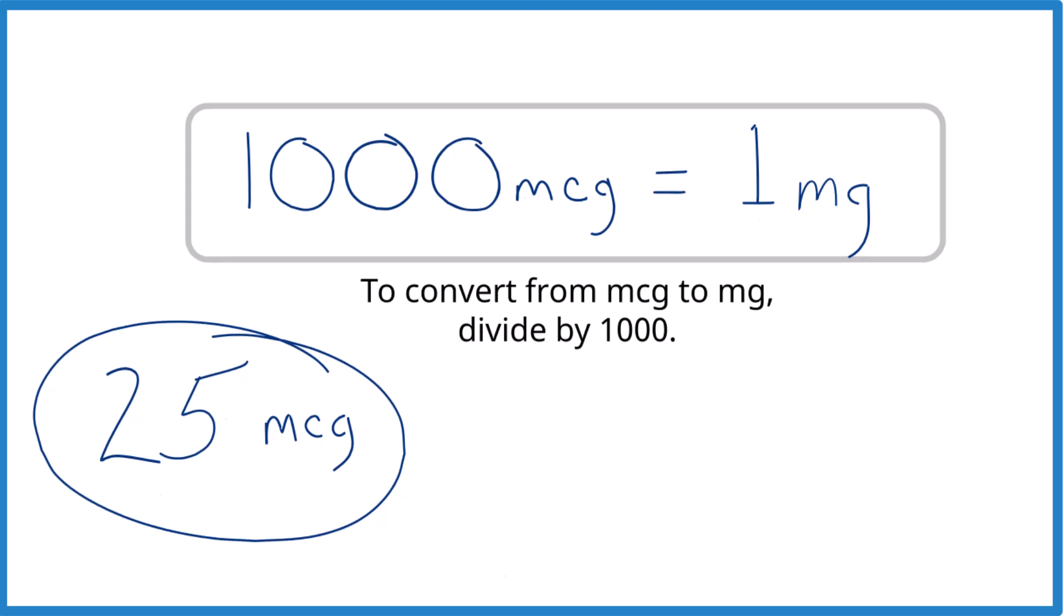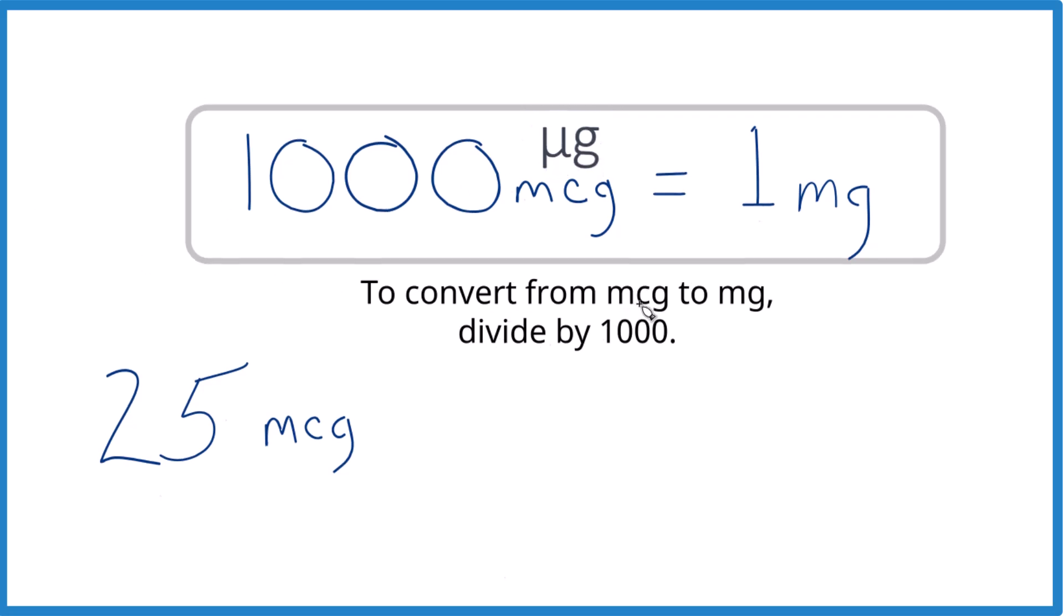So what you need to know is that there are 1,000 micrograms in 1 milligram. Sometimes you'll see micrograms written with the μg symbol. When we go from micrograms to milligrams, we just divide by 1,000.